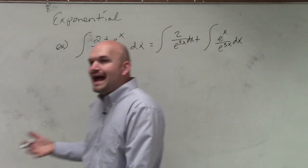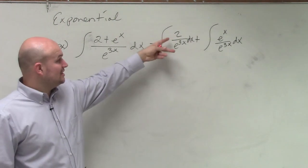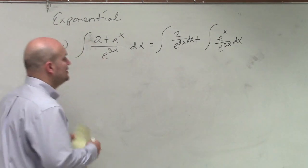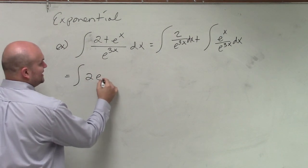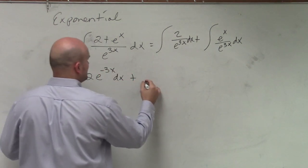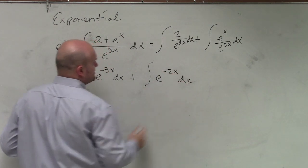Now, again, what happens when I have exponents that I'm dividing? As long as the bases are the same, you're just subtracting the powers, right? So in reality, what I really have here is the integral of 2 times e to the negative 3x dx plus the integral of e to the negative 2x dx.